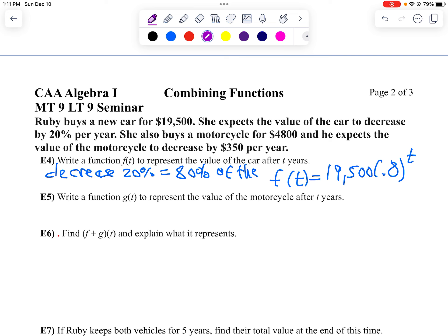because it's retaining 80% of the value every single year. And then we want to do the same thing for her motorcycle. Well, her motorcycle, they want to call that g of t. Well, that will be, oh, it's just going to go down by 350 per year. So she's going to go 4,800. We're not going to do an exponential decay. We're just going to say it's going to lose 350t every year.